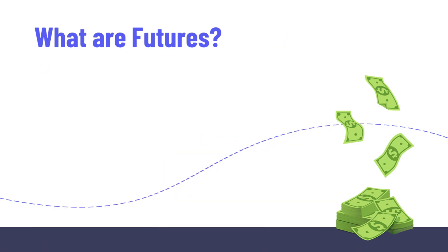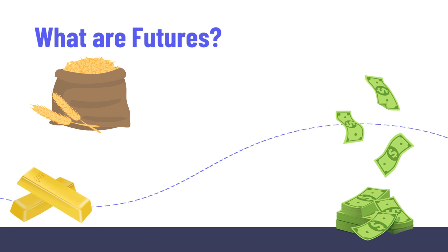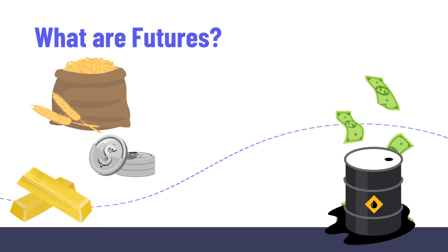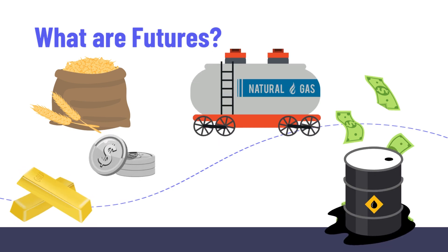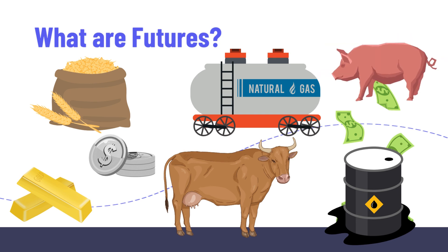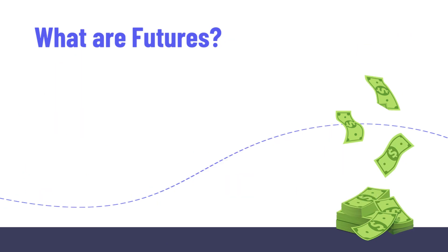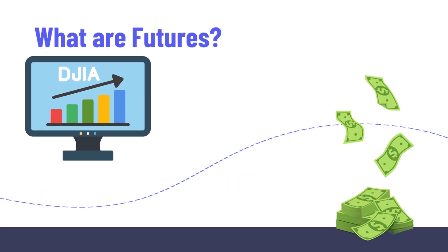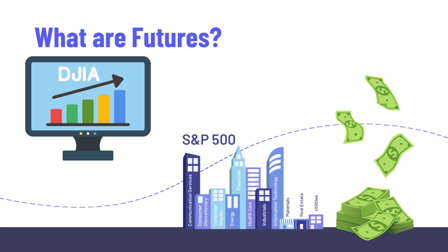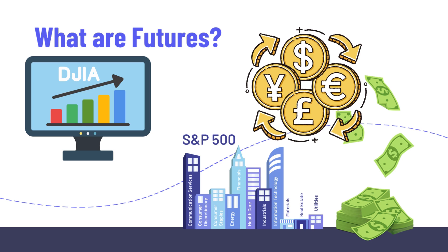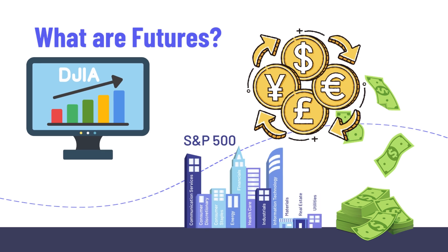Other popular futures are wheat, gold, silver, crude oil, natural gas, cattle, and pork bellies. But there are also financial futures like index futures on the Dow Jones and the S&P 500, and there are even futures on currencies and interest rates.